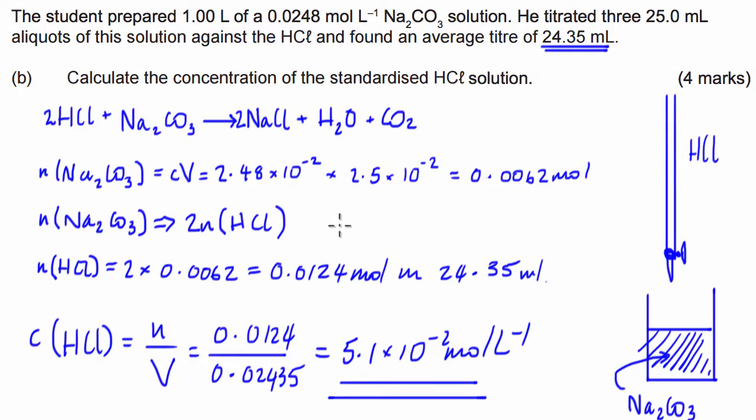So you can see it's not a very complicated question. As soon as we've got the formula, we can calculate the number of moles of sodium carbonate in the 25 mL aliquots, then we can use molar ratios to work out the number of moles of acid, and then we can use concentration equals number of moles over volume to work out the actual concentration of the acid.